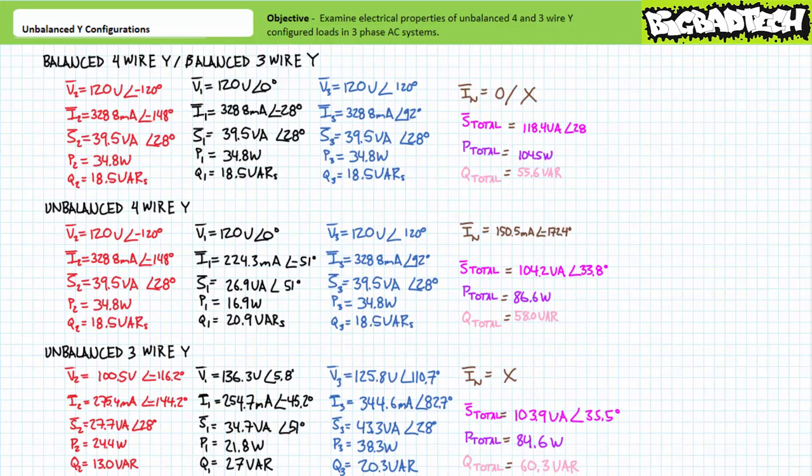In conclusion, this lecture examined the analysis of unbalanced four and unbalanced three-wire Y-configured loads in three-phase AC systems. Loads in unbalanced four-wire Y-configurations still directly experience the line to neutral voltage, and Kirchhoff's current law demonstrates that imbalanced current appears in the fourth neutral wire. No special purpose skills are employed — each branch can effectively be treated individually. In contrast, the superposition theorem is needed for unbalanced three-wire Y-configurations, where loads may not experience the same voltage because imbalanced current continues to circulate throughout the system. Finally, total apparent, total real, and total reactive power for balanced or unbalanced four or three-wire Y-configurations is still the summation of individual apparent, real, and reactive power figures.